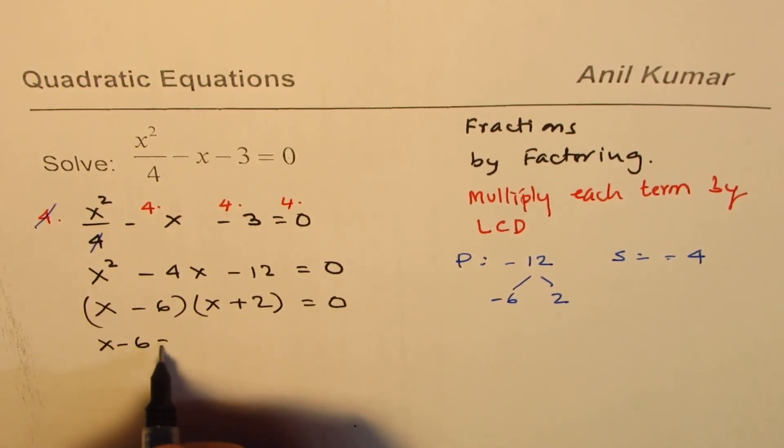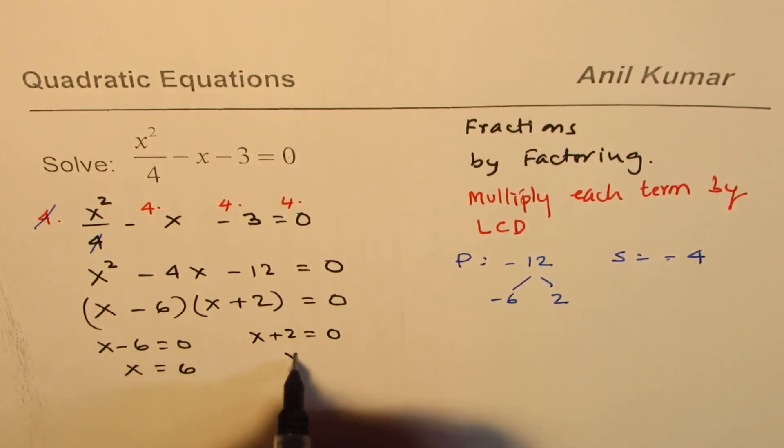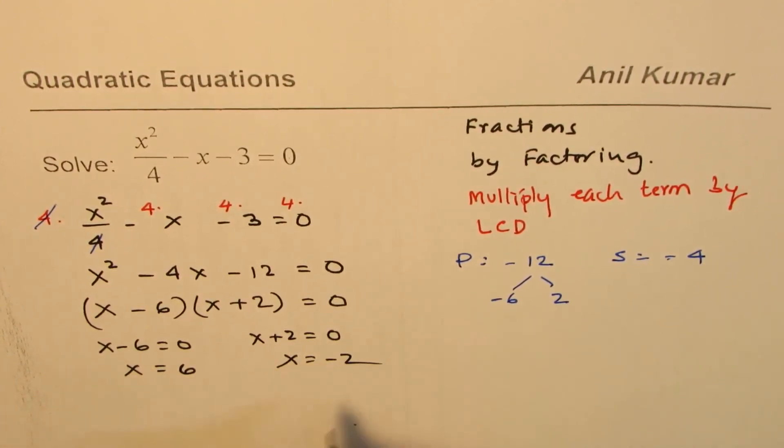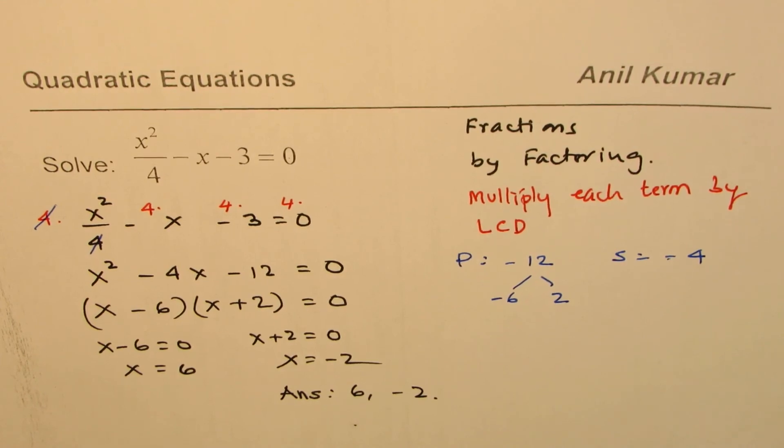So the first factor x minus 6 equals to 0 means x equals to 6. The second factor is x plus 2 equals to 0 means x equals to minus 2. And so we have two solutions here. So our answer is 6 and minus 2 for the given question.